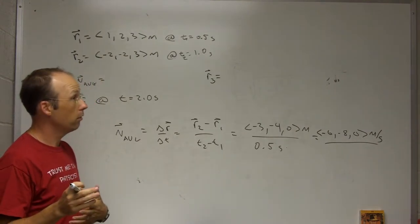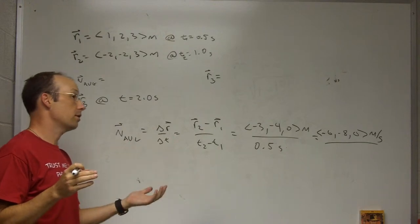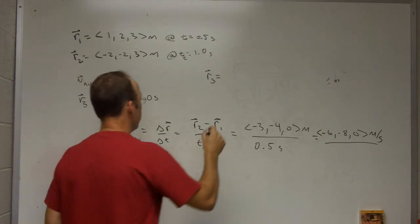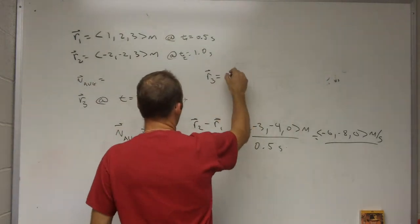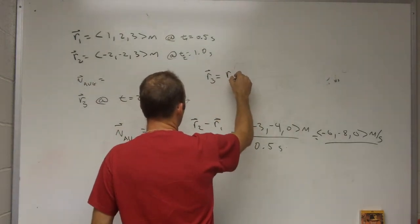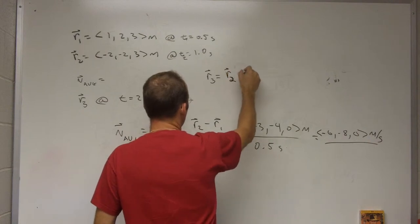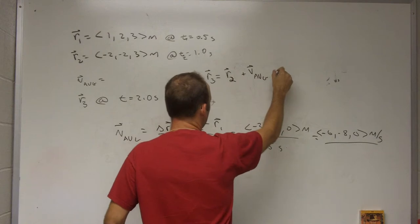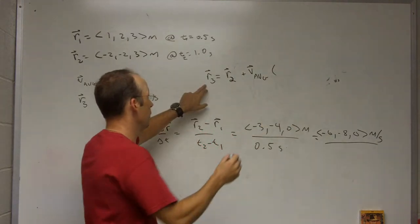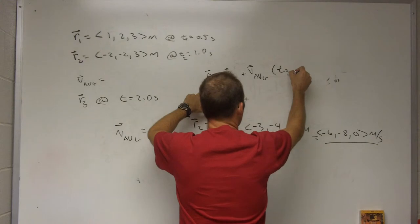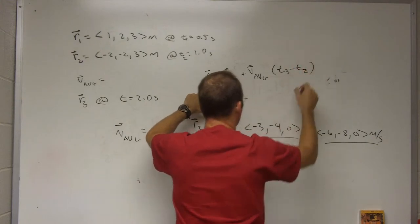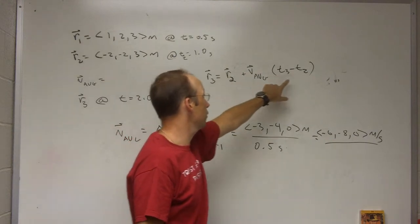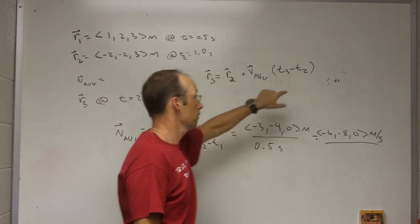I could use the change in time from 2 to 3 or 1 to 3. It should give me the same answer. Let me just do R3 equals R2 plus V average delta T. And I'll go ahead and write out delta T. It's going to be T3 minus T2. So if I use this position for position 2, I have to use the time for position 2. They have to match.